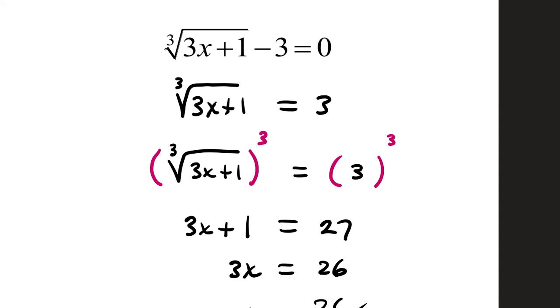If you substitute back in, 3 times 26 over 3 is 26, plus 1 is 27, cube root of 27 is 3, minus 3 is 0.